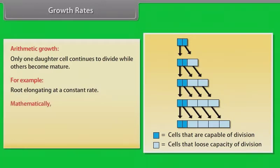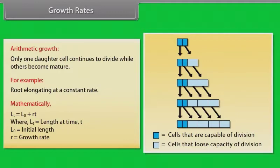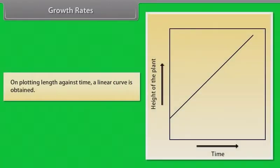Mathematically, Lt equals L0 plus RT. Where Lt equals length at time t, L0 equals initial length, R equals growth rate. On plotting length against time, a linear curve is obtained.